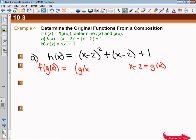x minus 2, I'm saying, is g of x, and that's squared, plus, there's x minus 2 again, so that's g of x, and then finally there's a plus 1 on the outside. Well, if that's f of g of x, then f of x is going to be...